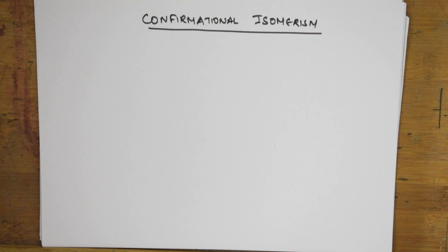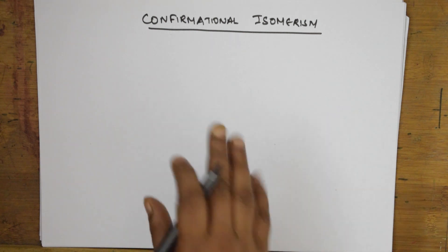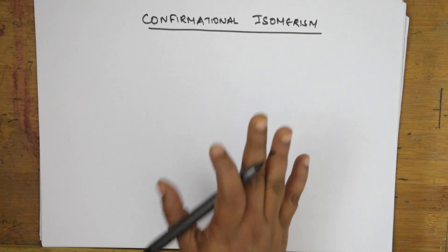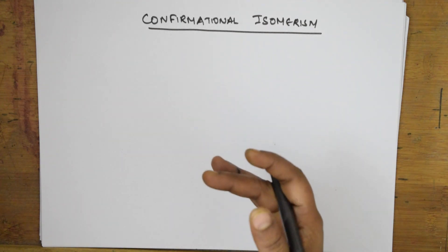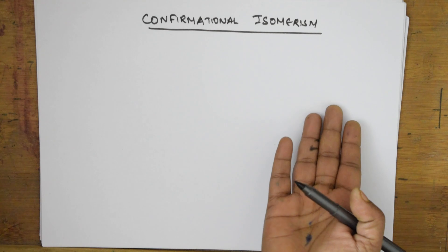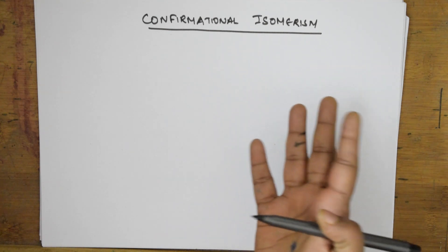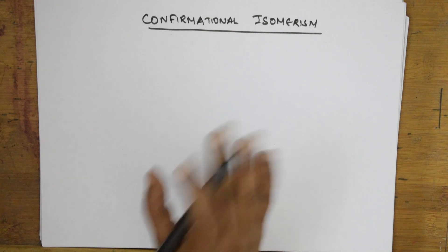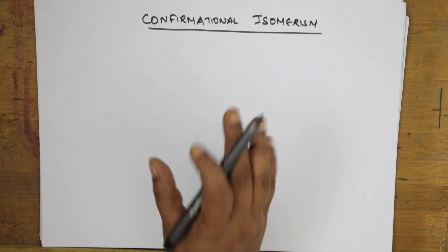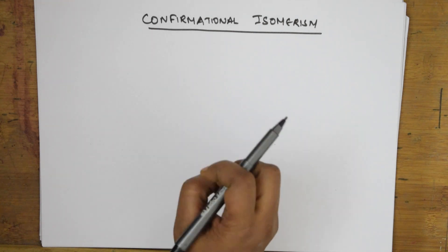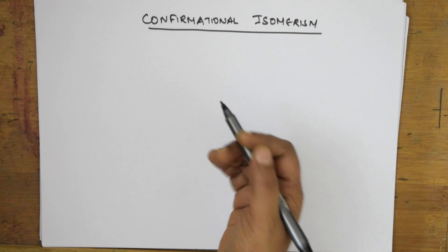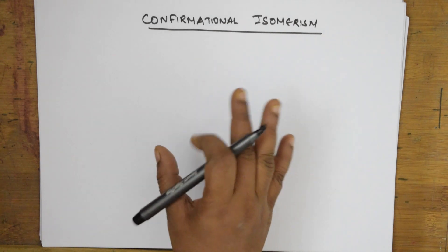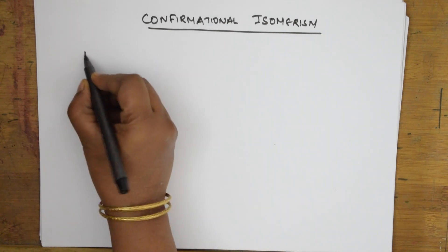When I speak about conformational isomerism, we'll see what conformational isomers or rotamers are and why they show conformational isomerism — everything in detail. This concept of conformational isomerism started with the alkanes. Why alkanes? The first important thing is that alkanes contain a carbon-carbon single bond.